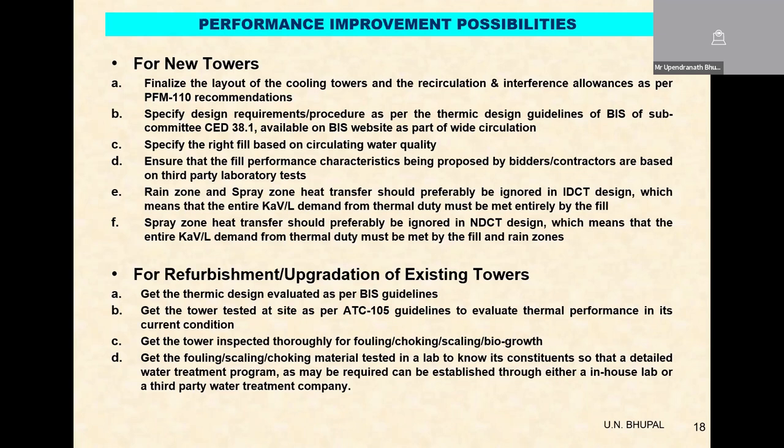If it is serious fouling, it is easy to identify by visual inspection. Some amount of fill — whatever layers are fouled and choked — those layers can be replaced to improve performance. The same with the distribution system — nozzles can be changed with better-performing nozzles. Once that is done, or if the cooling tower is in good condition without any fouling, the other way of establishing the performance after theoretical evaluation is through a performance test.